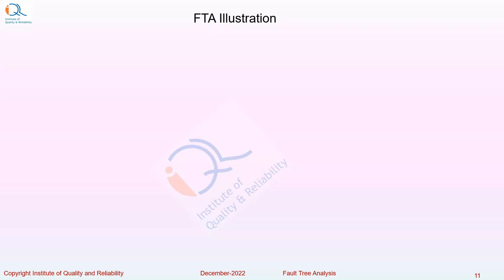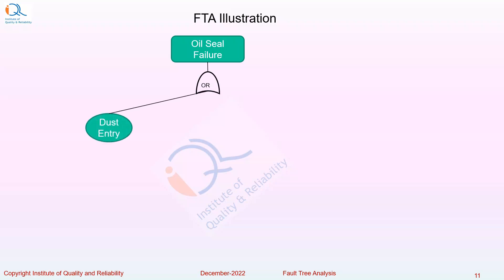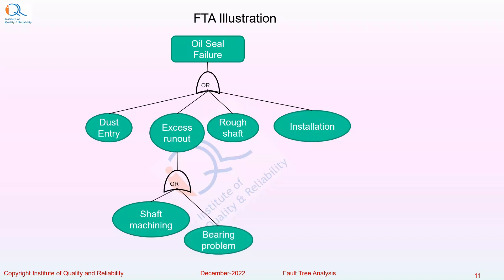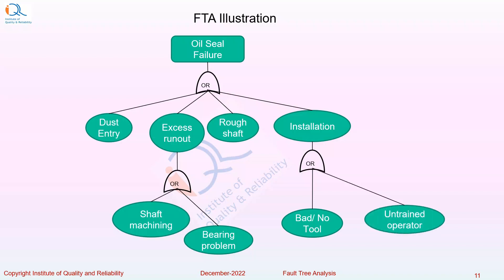Now let us apply fault tree analysis for a field failure. Consider an oil seal failure — this can fail for multiple reasons, so we use an OR gate. Causes include dust entry, excess shaft runout, rough shaft causing excessive wear, or installation error. Excess runout can be due to shaft machining error or bearing problem. Installation error can be due to bad or no tool used, or the operator not having received appropriate training.